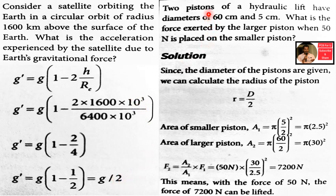The two pistons of a hydraulic lift have diameters of 60 cm and 5 cm. What is the force exerted by the larger piston when 50 N is placed on the smaller piston?